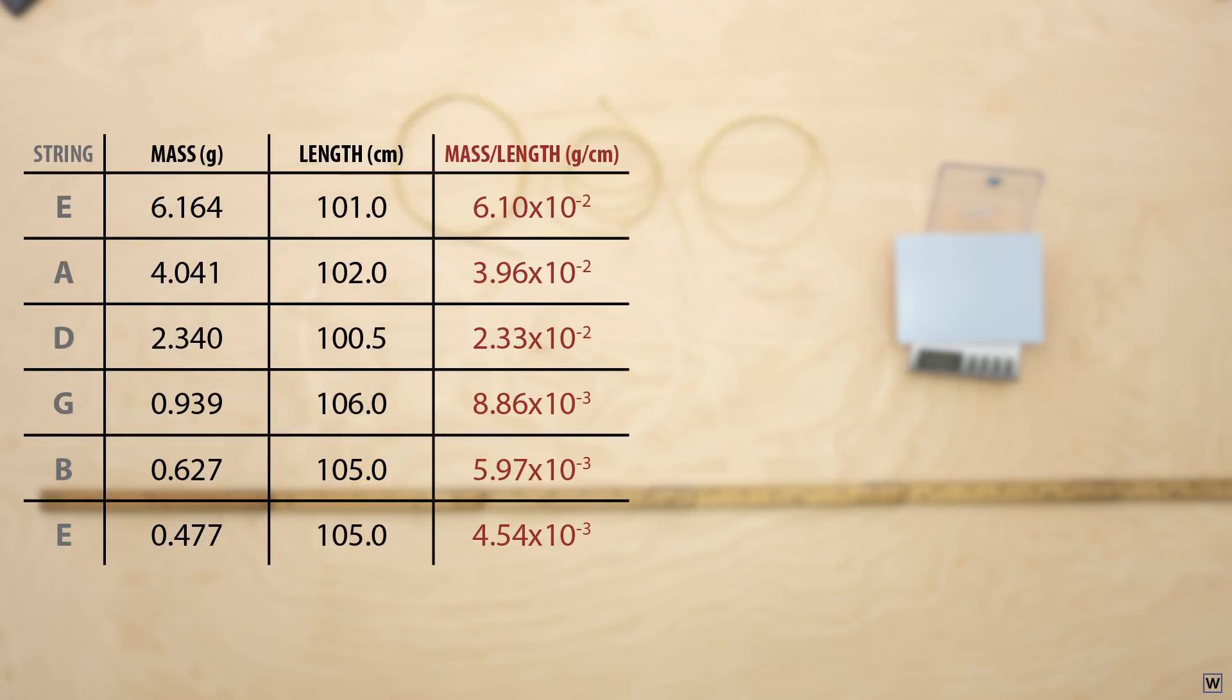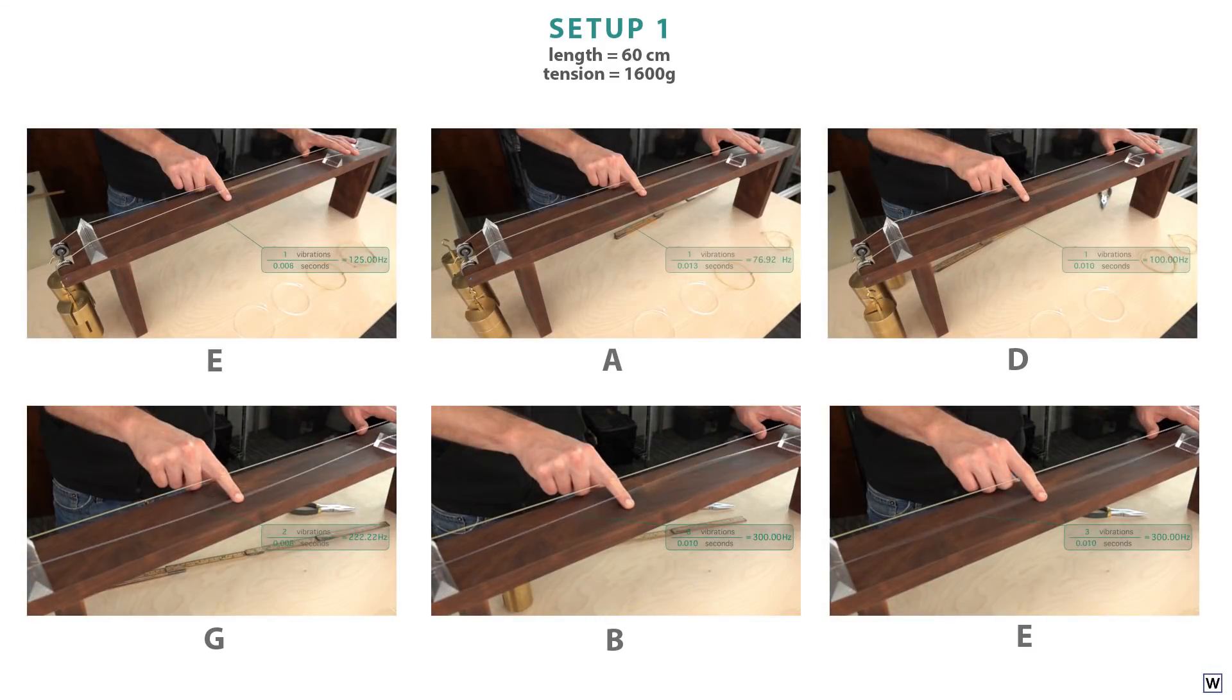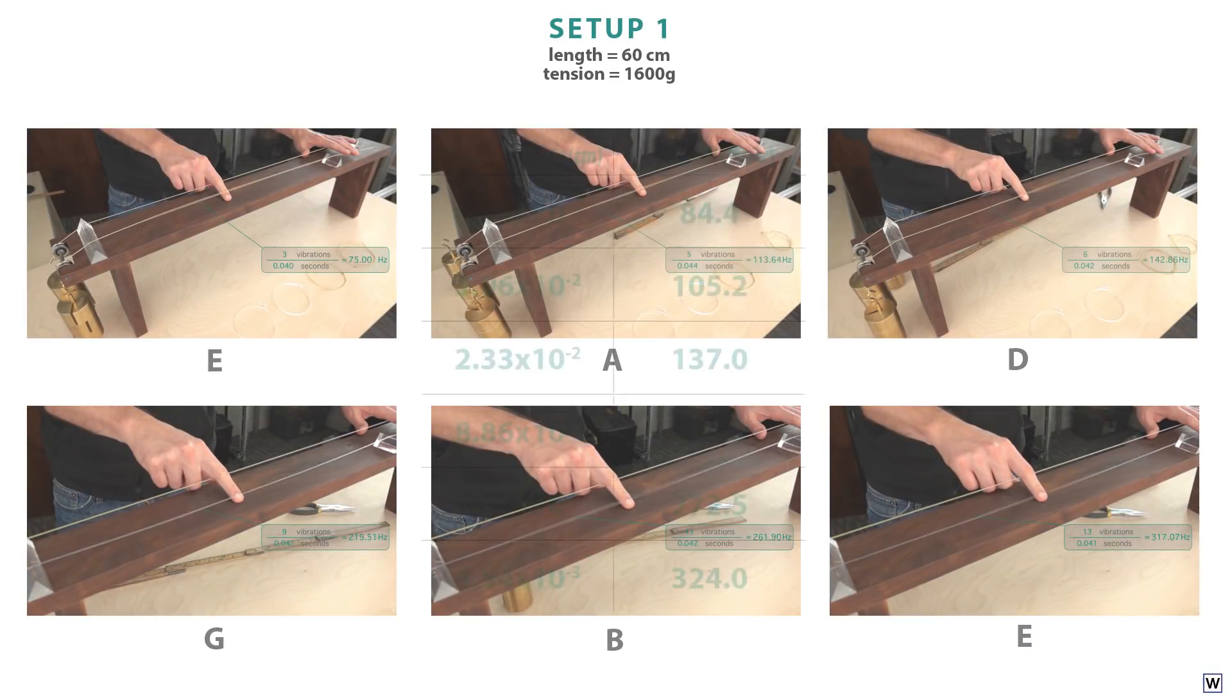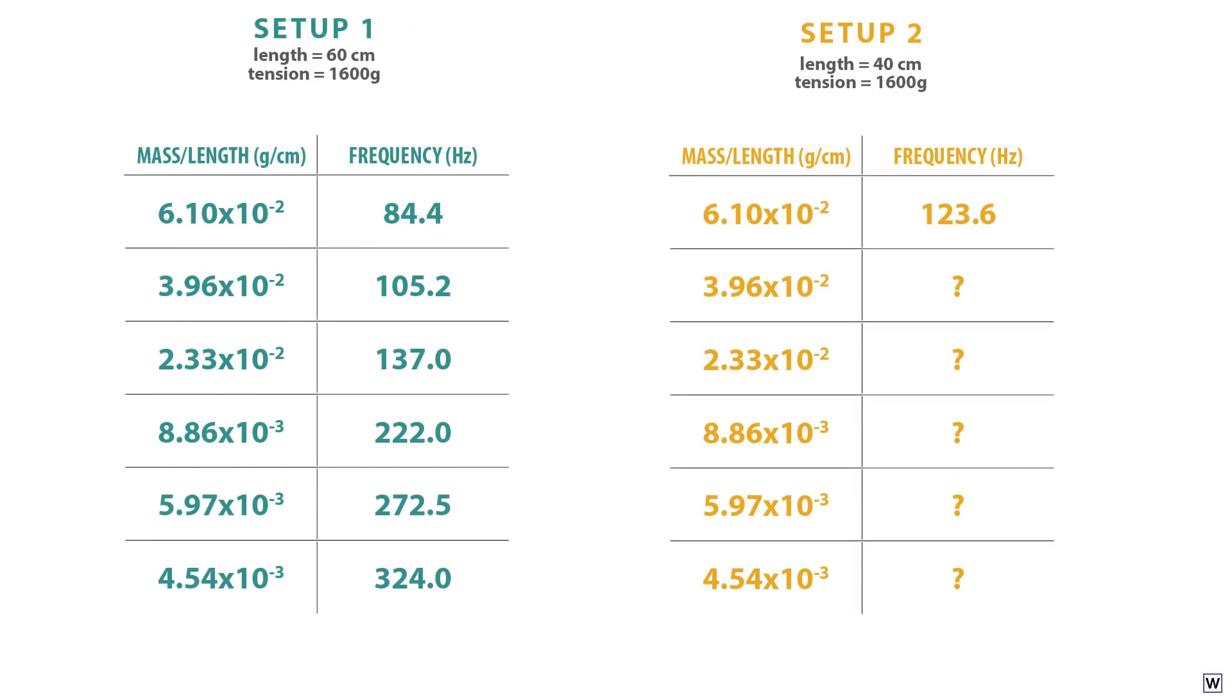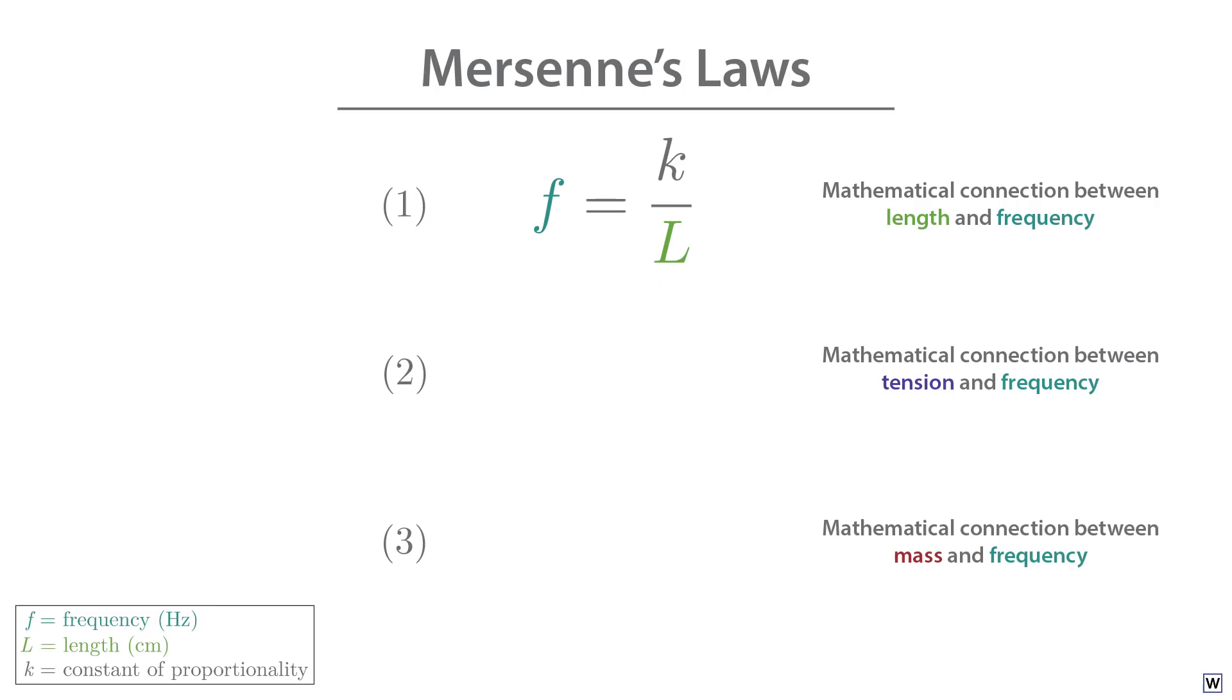We can fix this problem by dividing our mass measurements by the full length of each string. The resulting number, our mass per unit length, tells us the mass of each 1 centimeter section of our string, allowing us to ignore the effect of the overall length of our strings, and compare strings of different sizes more directly. Now, for a given length and tension, we'll measure the frequency of each string. And just as before, we'll set up a second configuration that we'll use to test our guesses.